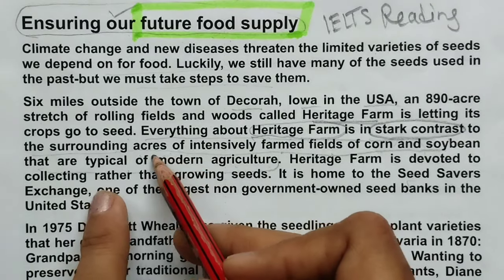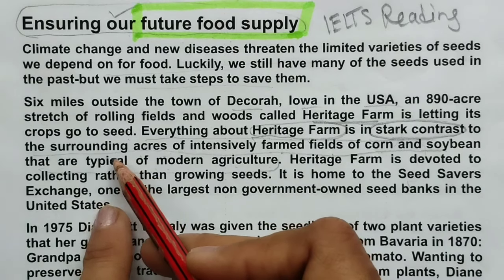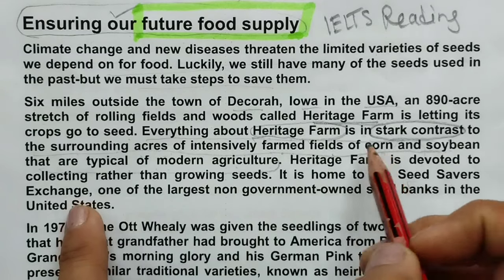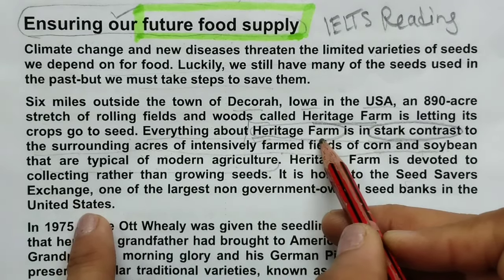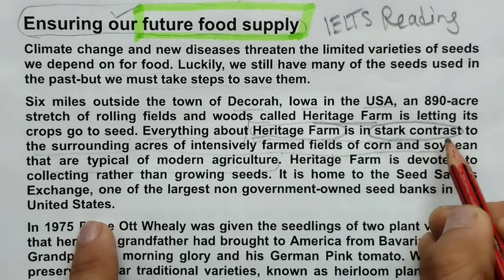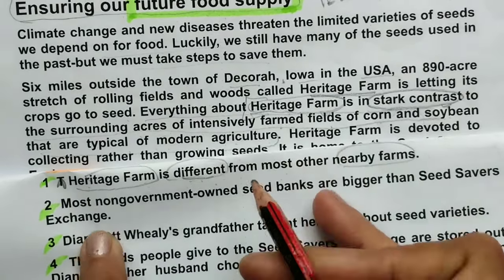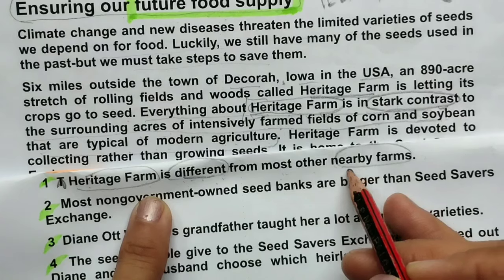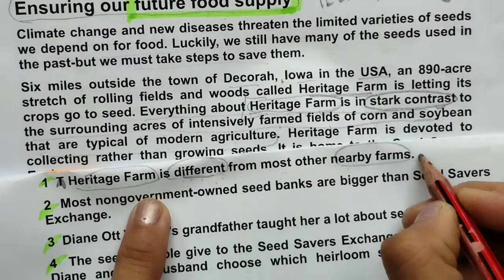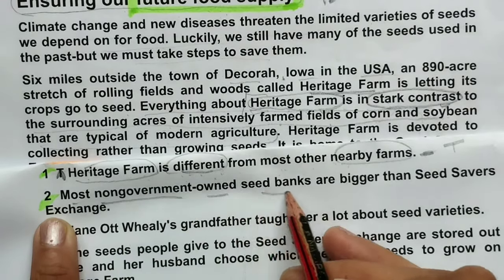Directly they have not given 'nearby farms' — they used 'surrounding acres of intensively farmed fields' as a paraphrase. Our main aim was to find whether Heritage Farm is in the same style or in contrast — and we got our answer. The question says 'is different from most other nearby farms' and the passage says 'is in stark contrast to the surrounding.' So the answer is True.